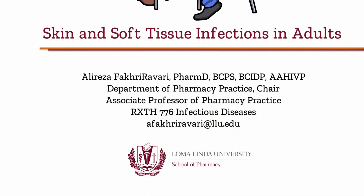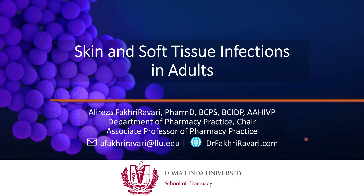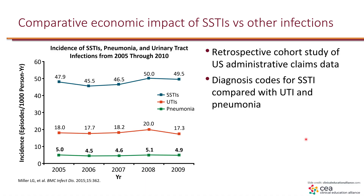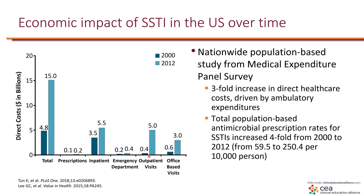I'm Dr. Fakir Obali and this is Skin and Soft Tissue Infections in Adults. In a retrospective cohort study of U.S. administrative claim data, the incidence of Skin and Soft Tissue Infection is about 50 per 1,000 person-years, which is significantly higher than UTIs and pneumonia. This high incidence leads to a huge economic impact.